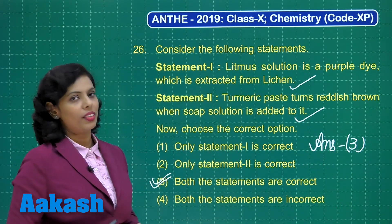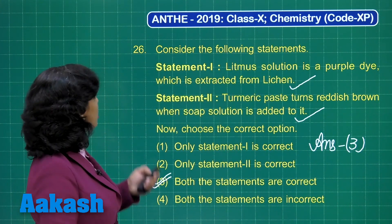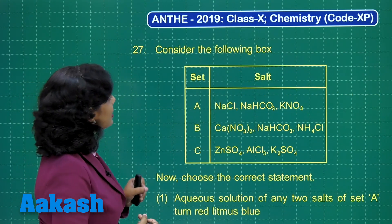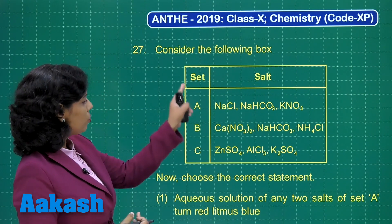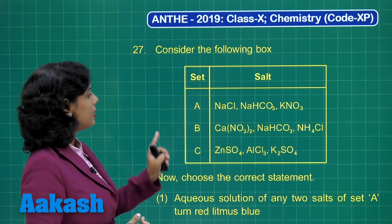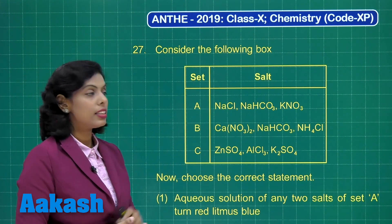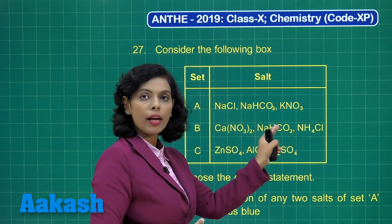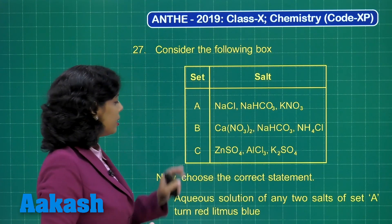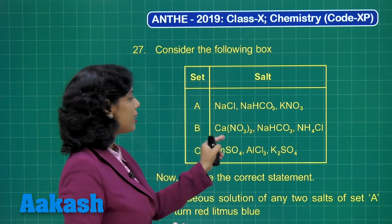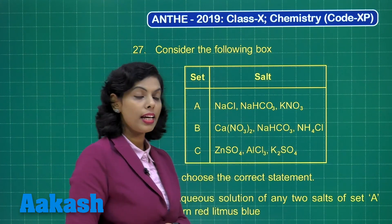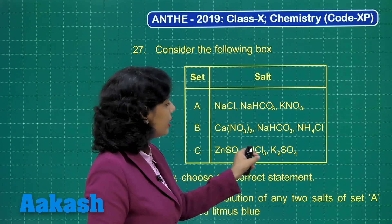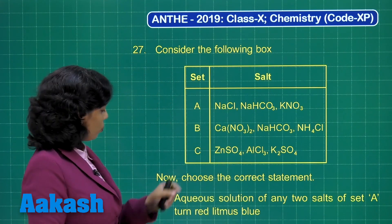Here is question number 27. Consider the following box — we have 3 sets: A, B, and C. In set A, you have sodium chloride, sodium hydrogen carbonate, and potassium nitrate. In set B, calcium nitrate, sodium hydrogen carbonate, and ammonium chloride. Set C consists of zinc sulfate, aluminium chloride, and potassium sulfate.